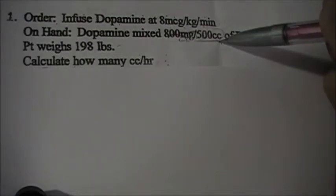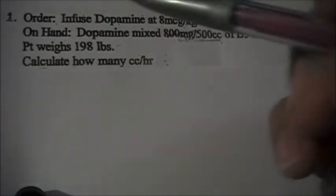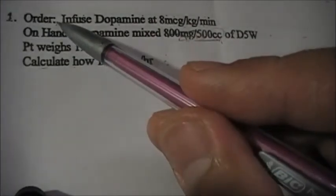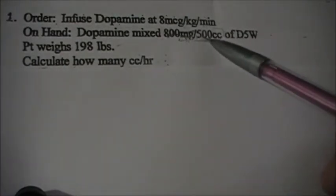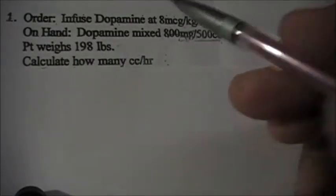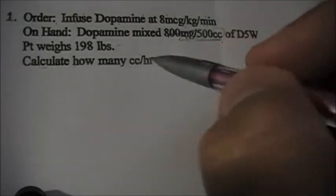This solution for me is kind of easier and less analysis. All you have to do is follow my modified equation. Here we go: Order infuse dopamine at 8mcg/kg/min. On hand is dopamine mixed 800mg per 500ml or cc's of D5 water. Patient's weight is 198 pounds. Calculate how many cc's per hour.